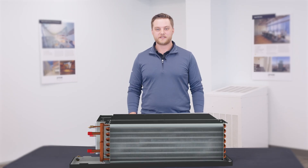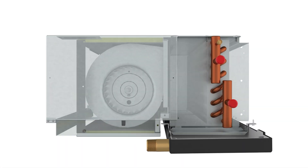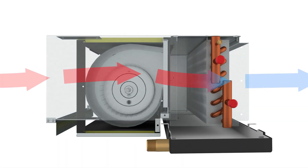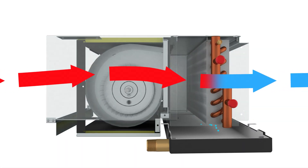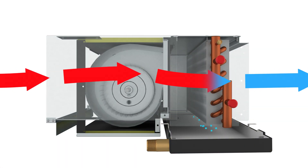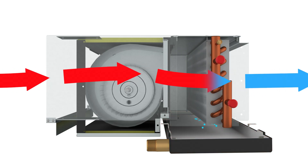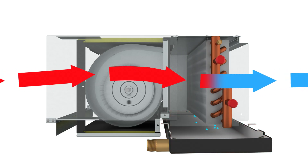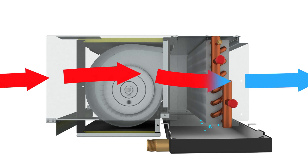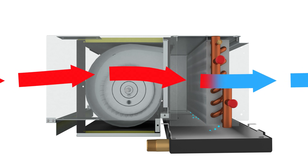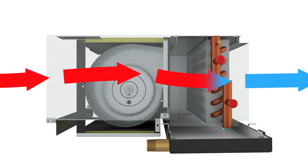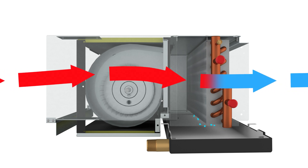One noteworthy subcomponent to consider is the condensate drain pan, which sits directly below the cooling coil, as is the nature of the horizontal unit orientation. The cooling coil is designed for airflow dehumidification, which leads to condensation as moisture is drawn out of the air.